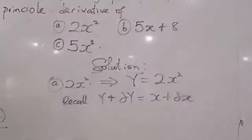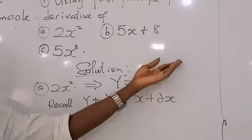They will give you a function, 2X squared, 2X squared. Recall, Y is always a function of X. Therefore, it is very common for you to write Y equal to 2X squared.